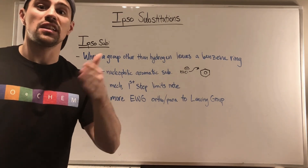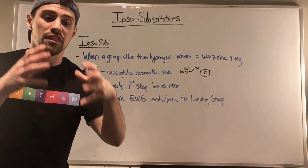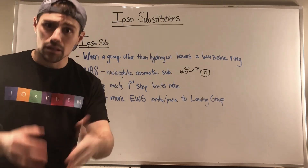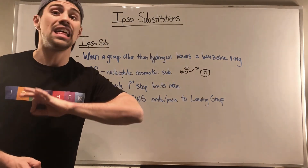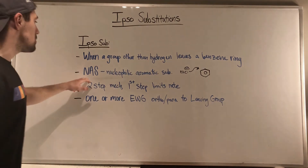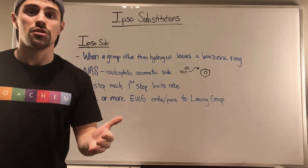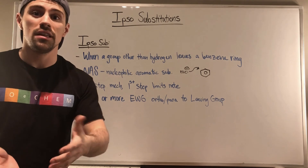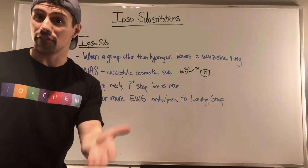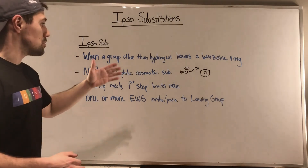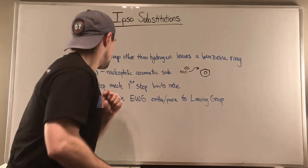In our earlier benzene days, we did electrophilic aromatic substitution — we were taking electrophiles, lovers of negative charge, and putting them on benzene rings. Well, this time we're doing the opposite: nucleophilic aromatic substitution. We're doing the substitution we kind of learned when we were first getting into O-Chem. We're taking something negative, a lover of positive charge, and attacking a benzene ring.